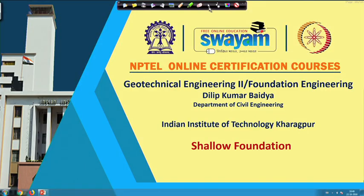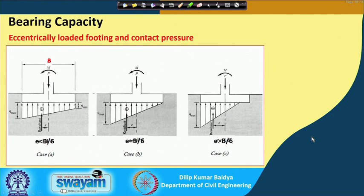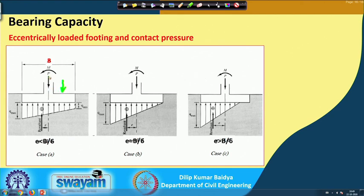If this is the width of the footing and loading was applied somewhere off-center, we can imagine at the center there is the same load plus this load multiplied by the eccentric distance as a moment. So we can modify this to: at the center there is a vertical load and additionally a moment. This means an eccentrically loaded footing can be idealized as a centrally loaded footing with a moment and a vertical load through the center.